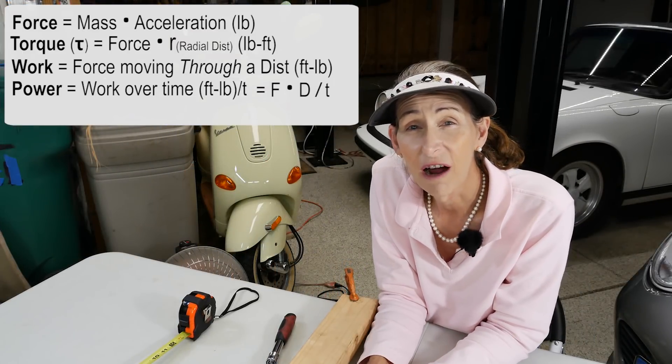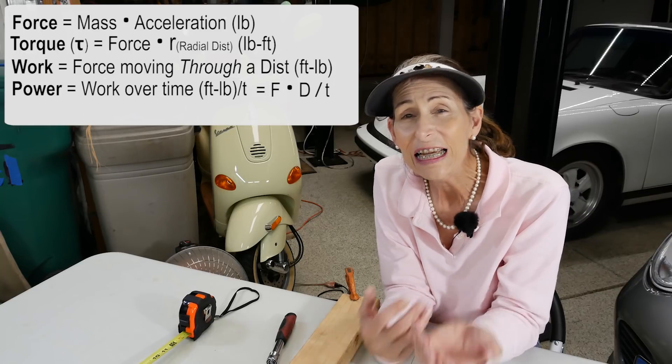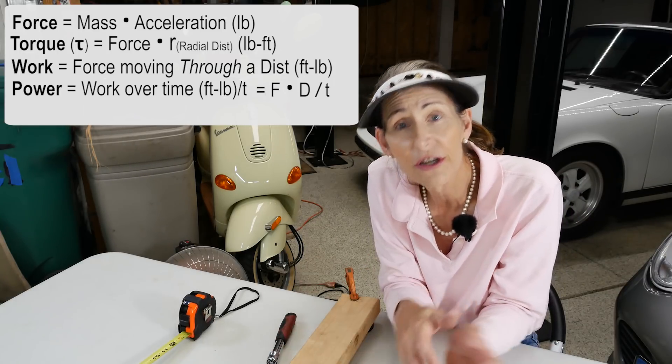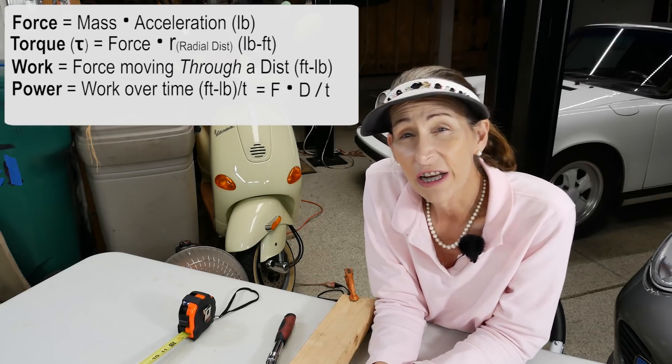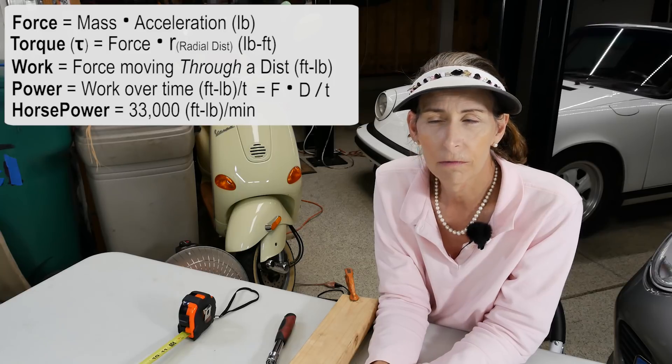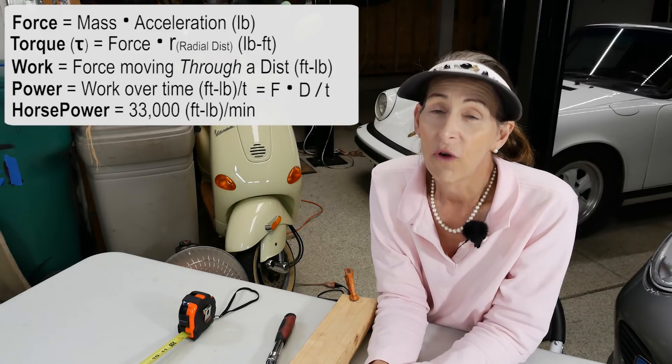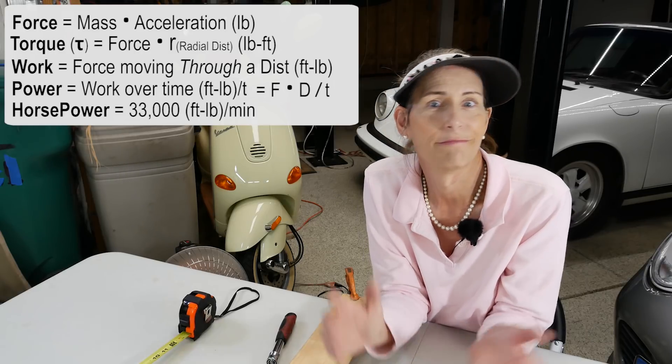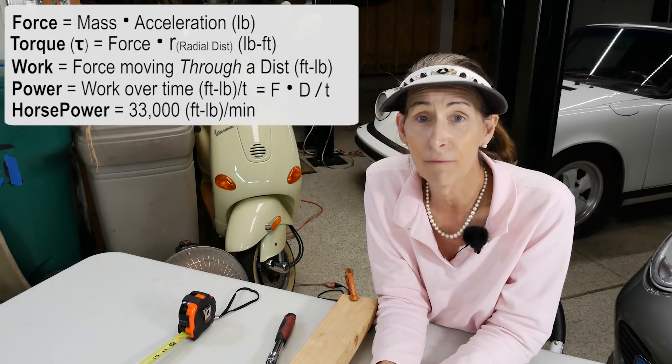So getting back to the horsepower, a horsepower is really just a scaling factor. Just like kilometers to meters, a horsepower is defined as 33,000 foot pounds per minute. So where did that come from? Well it's actually the output of a brewery horse. So it did actually come from a horse.